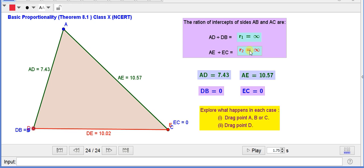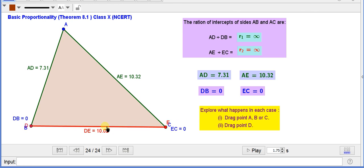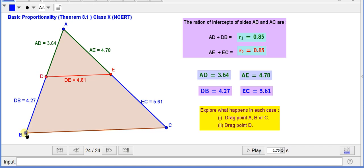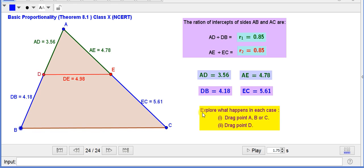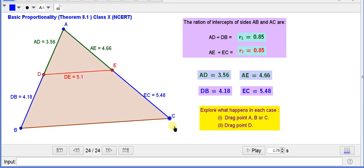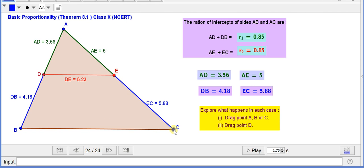So, this is very useful applet. With the help of this applet, we can verify this theorem practically in many ways. We have shifted here B and C. Now, I am changing the position of point AC.